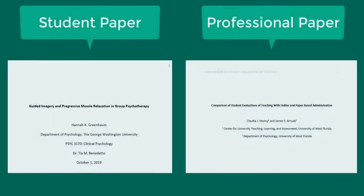The 7th edition of APA format has distinctions between student papers and professional papers. Students should use the student version unless requested otherwise by your instructor.